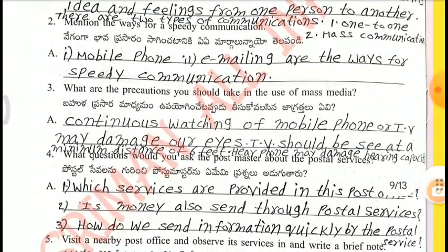3rd one — What are the precautions you should take in the use of mass media? Continuous watching of mobile phones or TV may damage our eyes. TV should be seen at a minimum distance of six feet. Earphones may damage our hearing capacity.